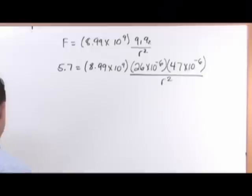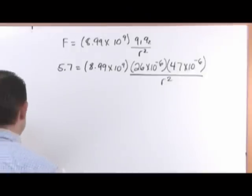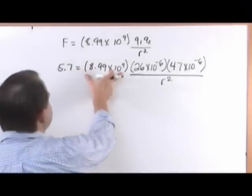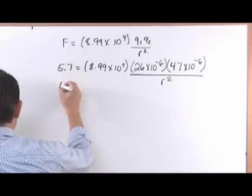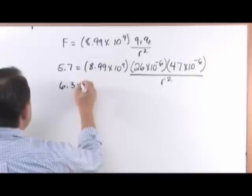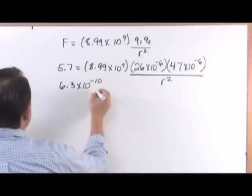Okay? Enough preaching. So let's continue on to this. So if I take the 5.7 and I divide by 8.99 times 10 to the 9, I'm going to get 6.3 times 10 to the negative 10 on the left hand side.